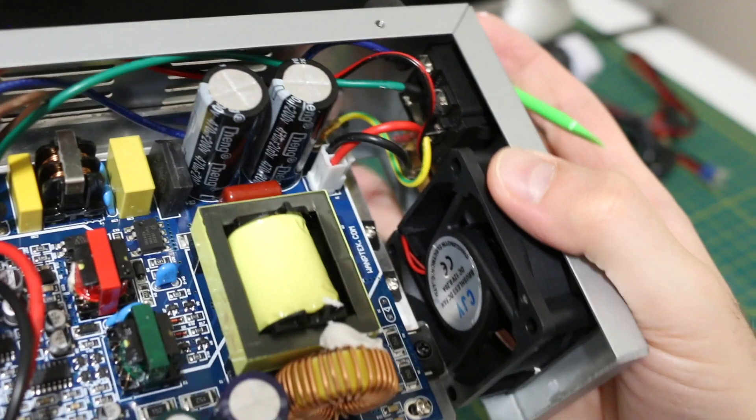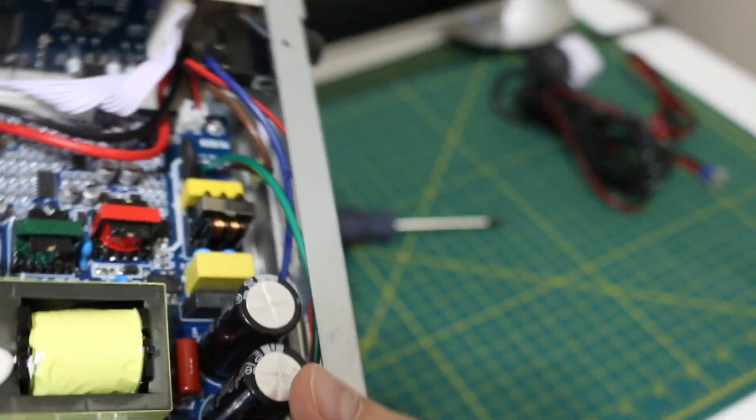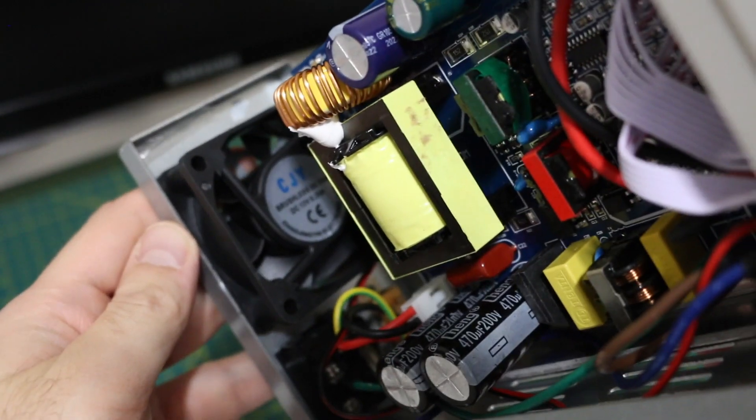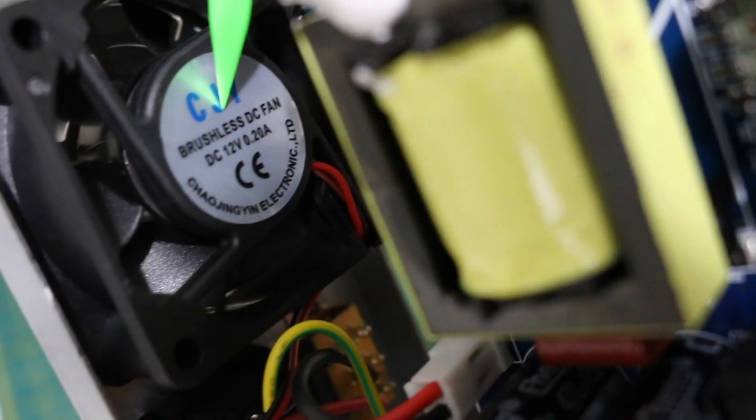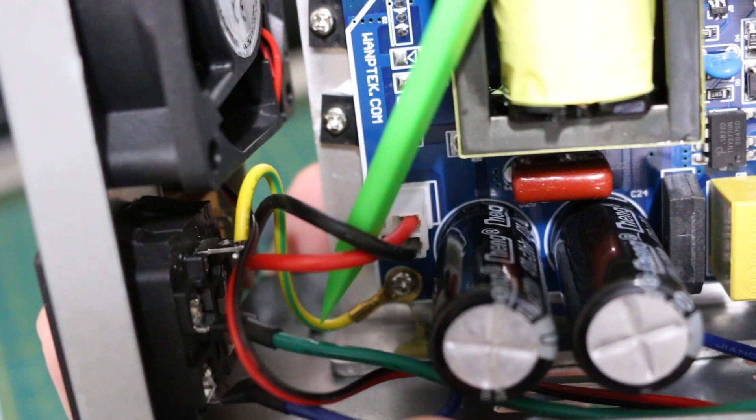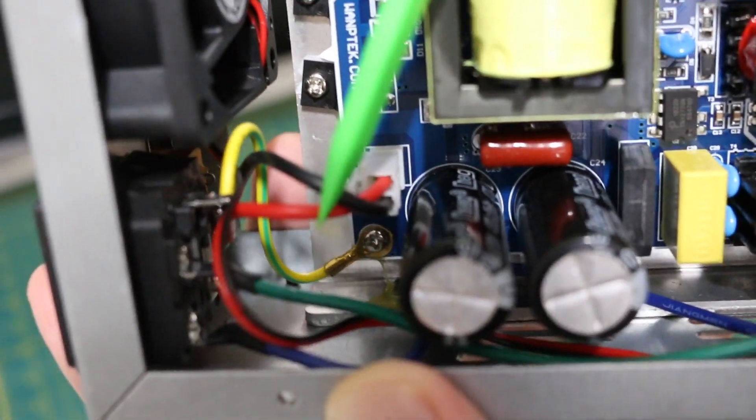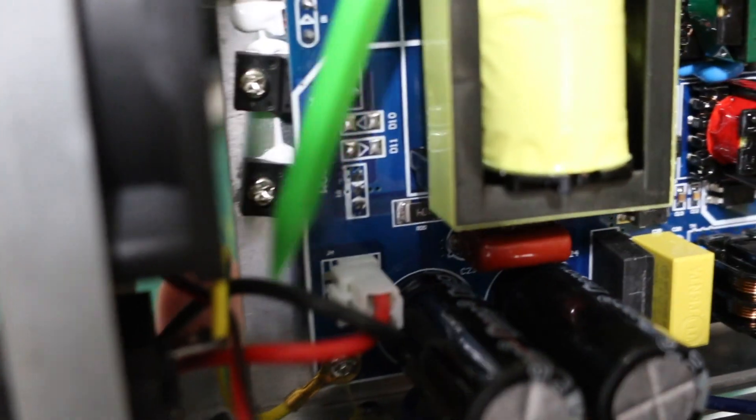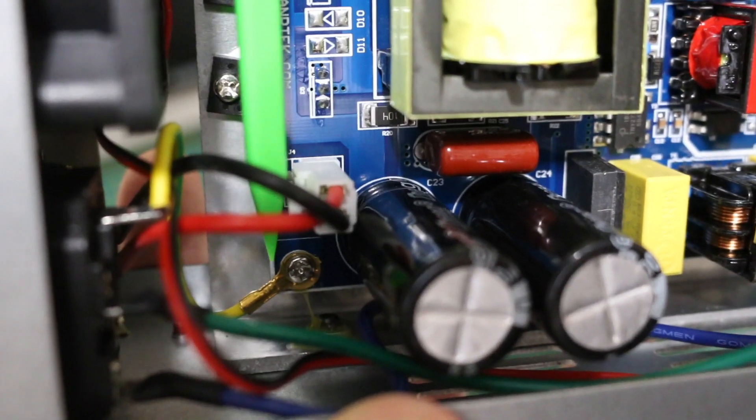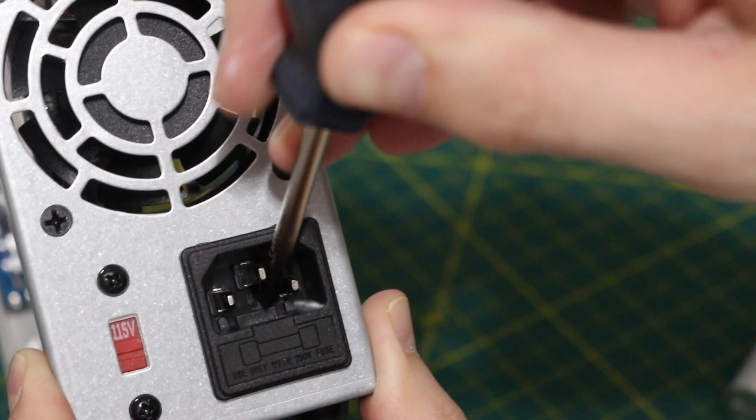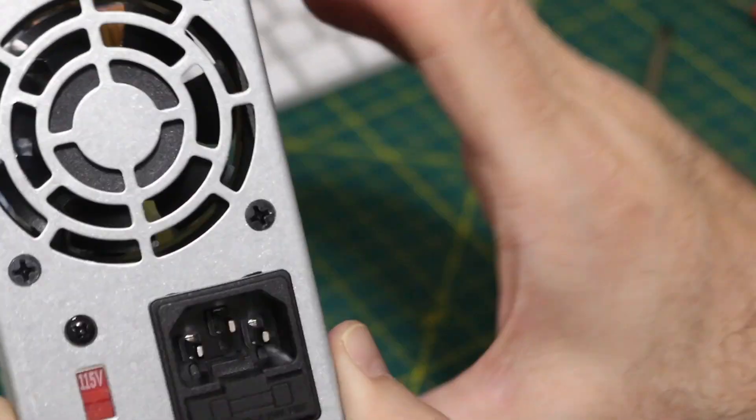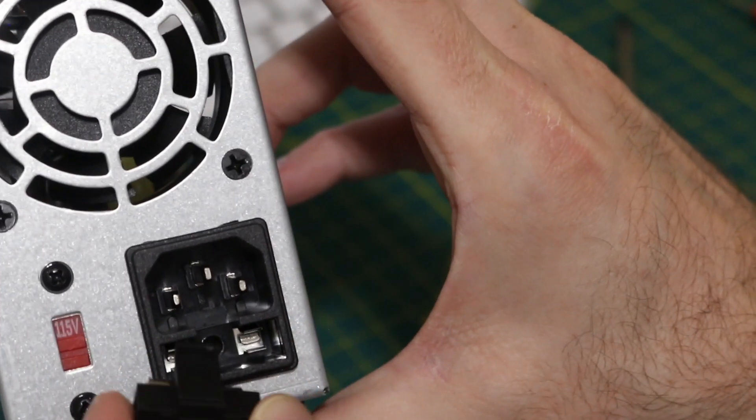Everything here looks nice and neat. We have all kinds of inductors, transformers, we have a brushless DC fan for cooling, 12 volt, 200 milliamp, and a ground terminal going to this ring terminal attached to the circuit board and the chassis with that screw point there.